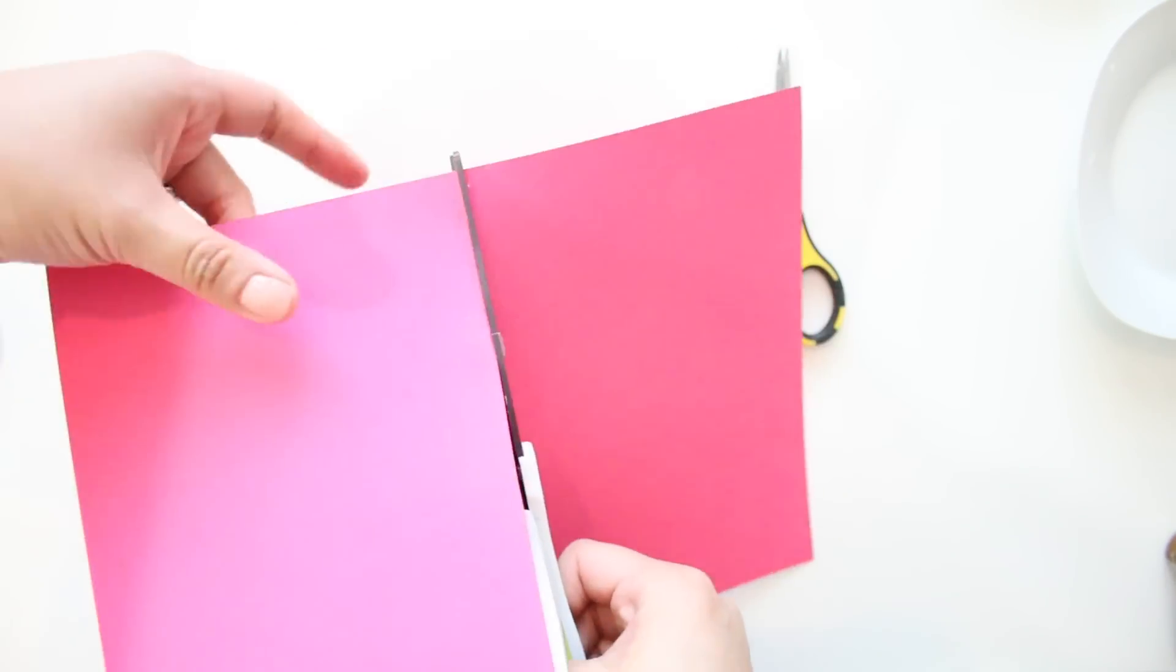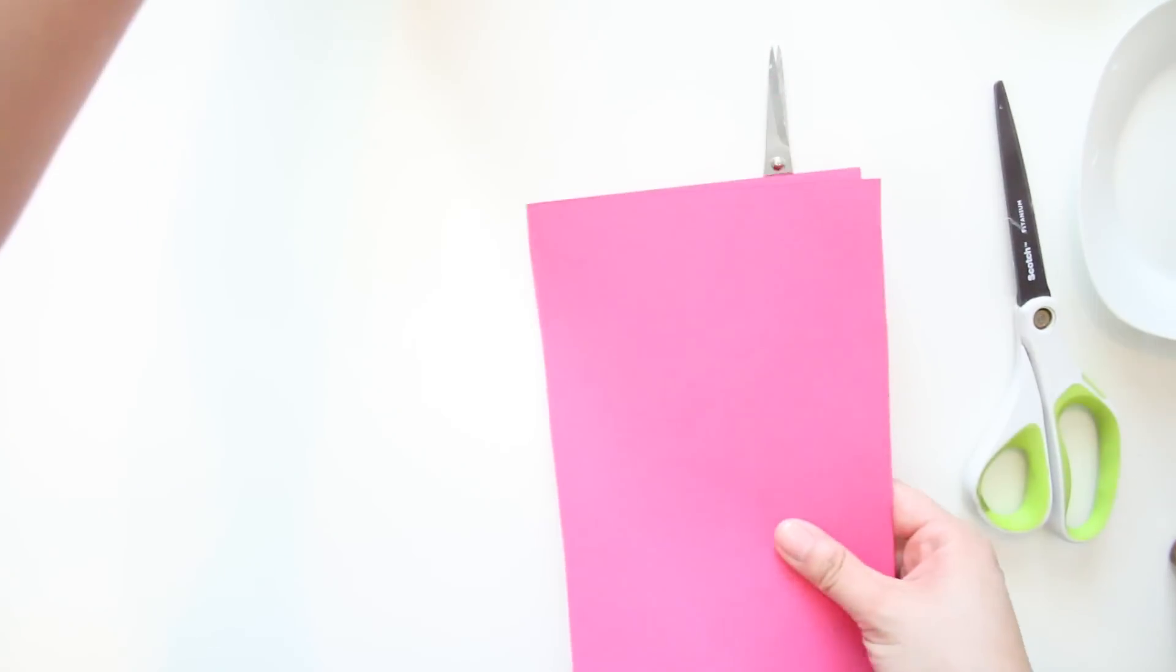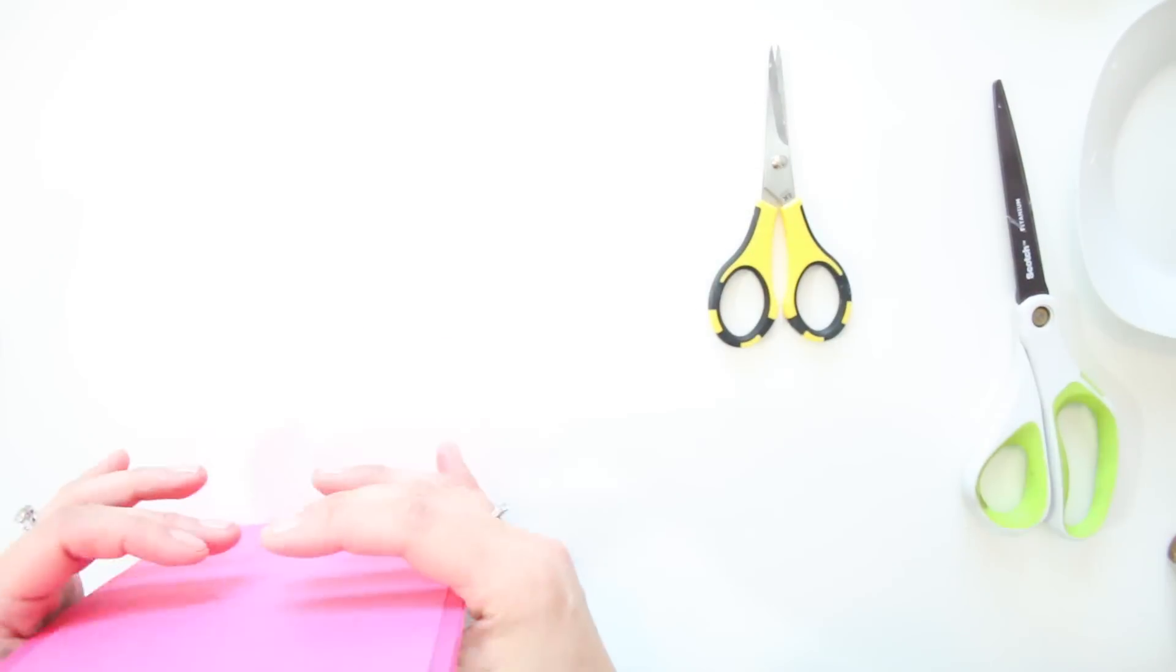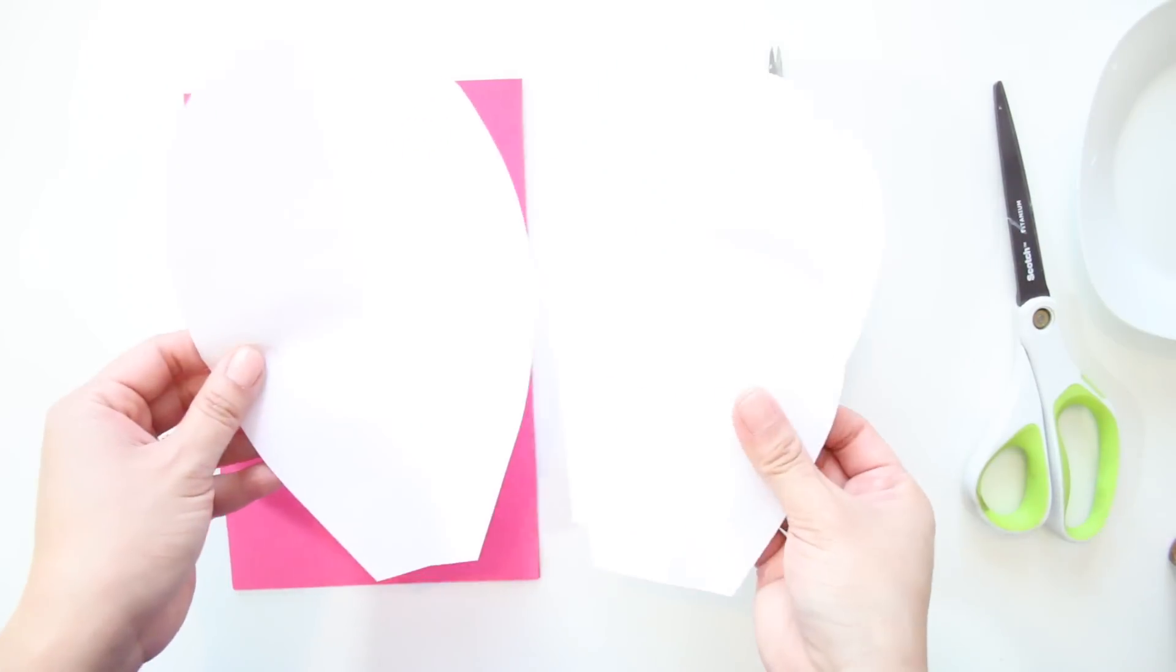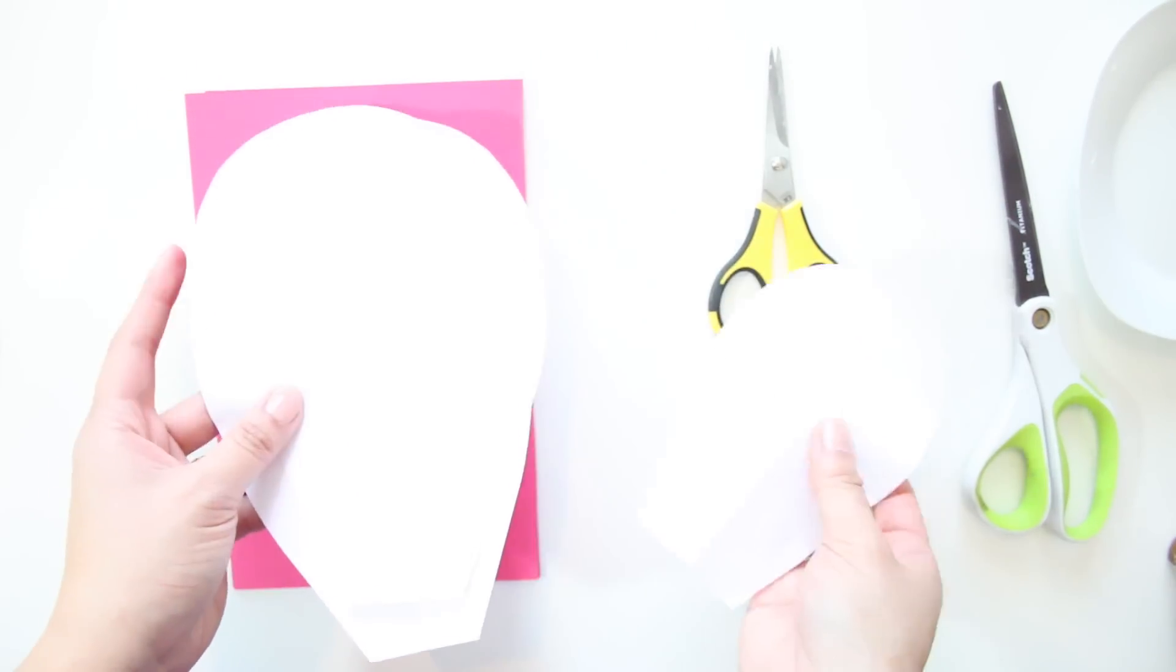You'll use 6 of the half-sheets for the largest petals, 6 half-sheets for the medium-sized petals, 3 half-sheets for the smallest petal, and 3 half-sheets for the center of the flower.